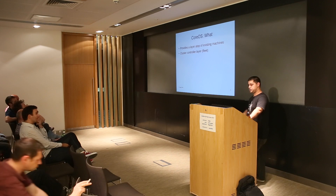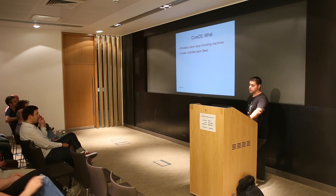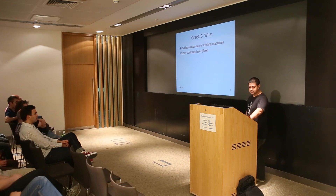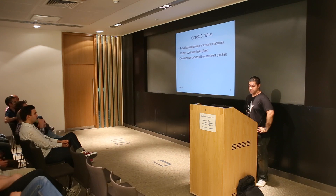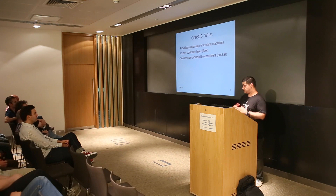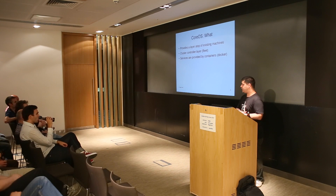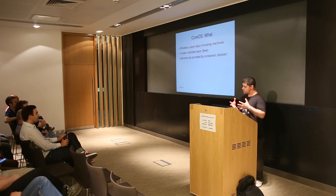CoreOS consists of a couple of components. One is obviously the kernel. Another is the cluster controller layer called Fleet, which is essentially a cluster-wide init system. Most of us will have heard of SysVinit, BSD's init, Upstart, or Systemd. Fleet takes advantage of Systemd's unit files and can start services across a range of machines. CoreOS also provides an ability to run services using Linux kernel cgroups. Implementations include Docker, which just hit 1.0, as well as LXC and other custom ways. CoreOS is very much focused on running services contained within a Docker instance.